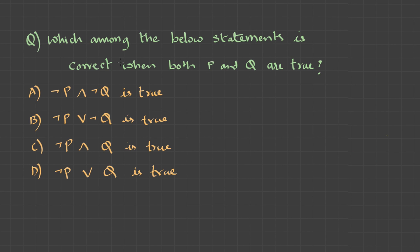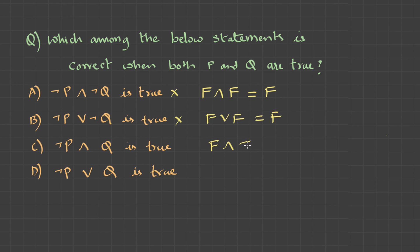Which among the below statements is correct when both P and Q are TRUE? NOT P AND NOT Q: FALSE AND FALSE is FALSE — not correct. NOT P OR NOT Q: FALSE OR FALSE is FALSE — not correct. NOT P AND Q: FALSE AND TRUE is FALSE — not correct. NOT P OR Q: FALSE OR TRUE equals TRUE — so this is correct and the answer is D.